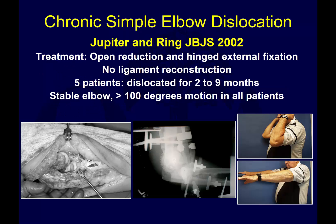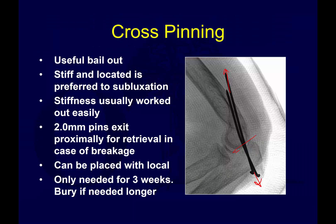Chronic elbow dislocation — or chronic simple elbow dislocation — is a very unfortunate and difficult case to reconstruct. This is a paper by Dr. Ring and Jupiter showing how, in a handful of cases, this can be treated in expert hands with hinged external fixation and letting them scar in, as shown in this case here.